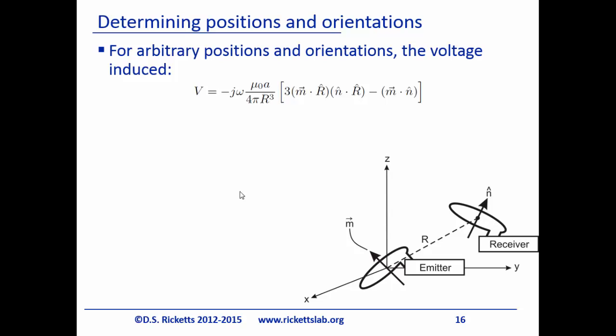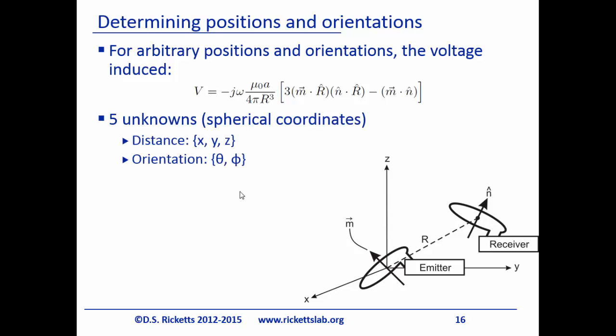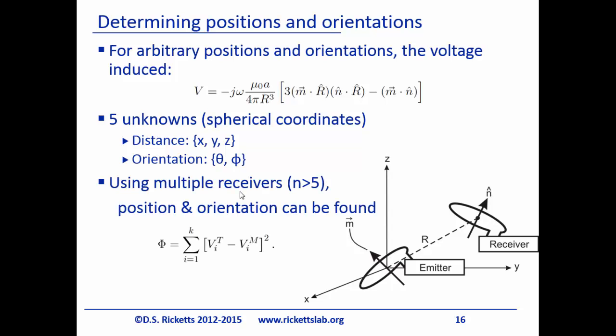We set up our emitter and receiver and write the received voltage V in terms of the emitter geometry. If you tell me what the emitter is, I have math that tells me exactly what the voltage will be — physics tells me this, no guessing. There are five unknowns: X, Y, Z, theta (elevation angle), and phi (azimuthal angle). With five unknowns and five receivers, we can actually figure out orientation and position from this — because there's a known physics-based mapping from emitter to receiver.